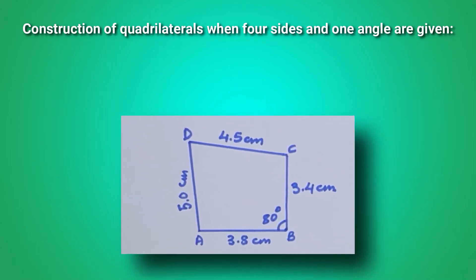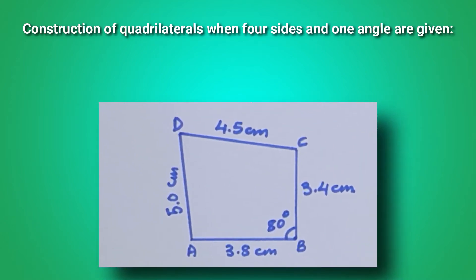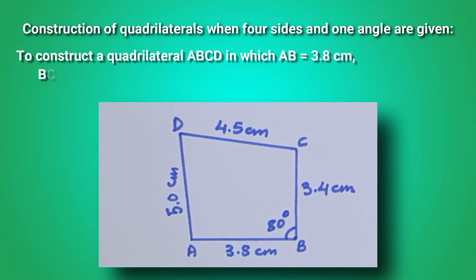Construction of quadrilaterals when four sides and one angle is given. To construct a quadrilateral ABCD in which AB is equal to 3.8 cm, BC is equal to 3.4 cm, CD equal to 4.5 cm, AD equal to 5 cm, and angle B equal to 80 degrees.